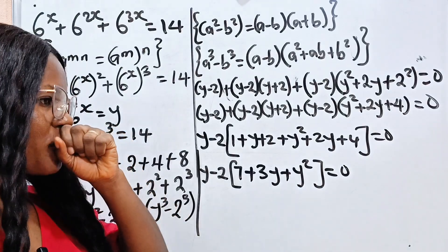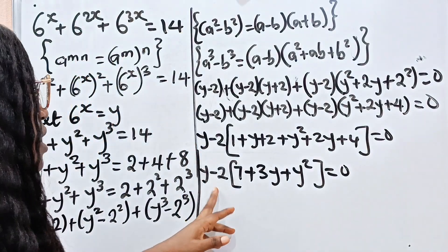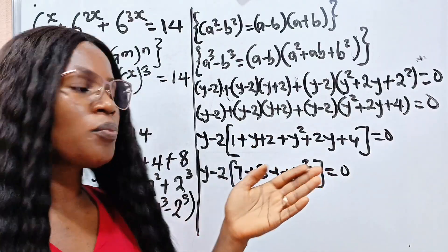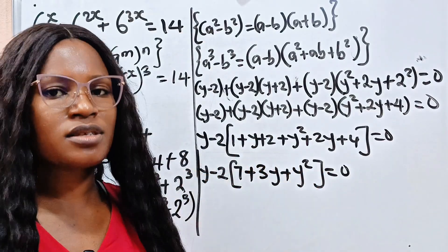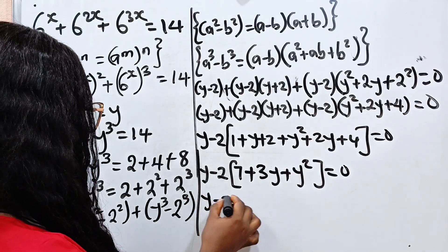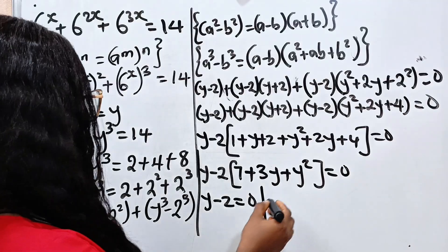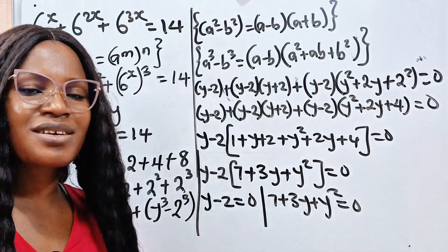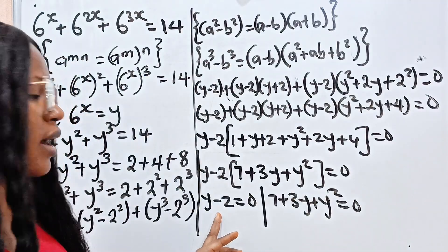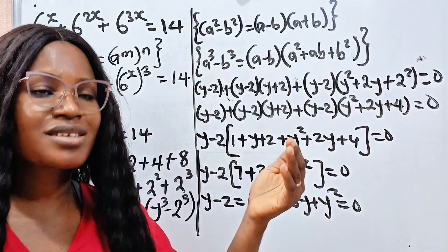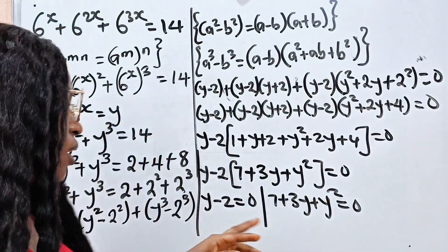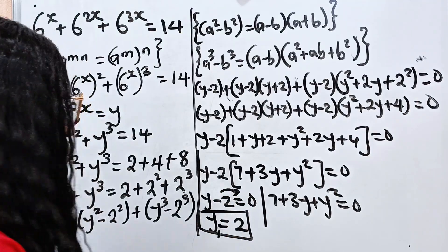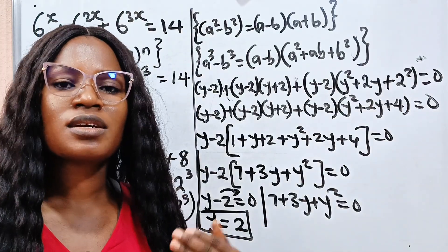Now remember that when the product of two numbers equals 0, it simply means either the first number is 0, or the second number is 0, or both are 0. So we can write this as y minus 2 equals 0, or y squared plus 3y plus 7 equals 0. Remember that we are looking for the value of x, not y, so once we get y we still need to solve for x. From the first factor, y is equal to 2.